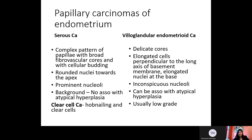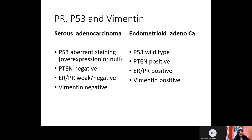Clear cell carcinomas would show hobnailing and clear cells. The best way to confirm these cases is by doing PR, P53, and Vimentin. You can also do PTEN if it is available in the lab.